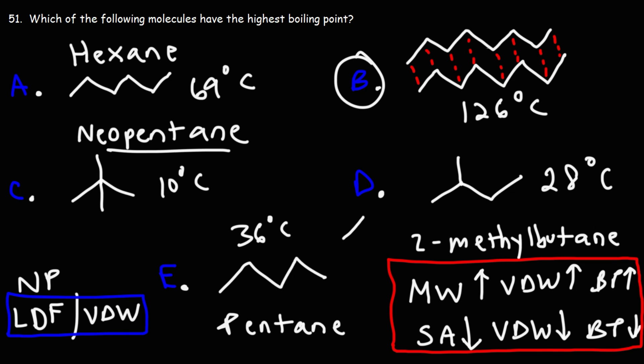More thermal energy will be needed to separate these two molecules so that they can escape the liquid phase and enter the gas phase. So that's why as the molecular weight increases, as you add more atoms to the chain, there's more area of contact. The van der Waals forces go up, and the boiling point increases. More energy is needed to break those bonds.